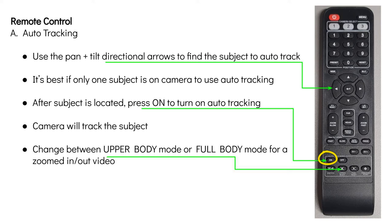Some things to consider: it's best if one person is in the frame while setting up auto tracking. You can also move between full body mode or upper body mode by pressing the buttons in the bottom row of the remote control. This will show a more zoomed in or zoomed out video.